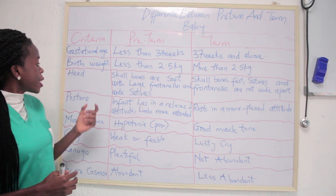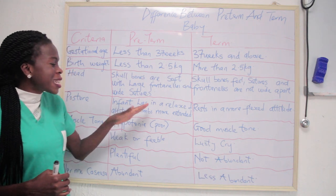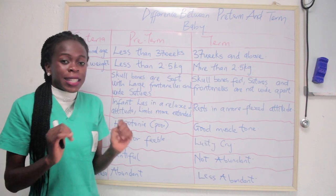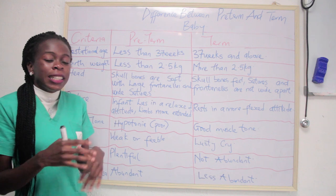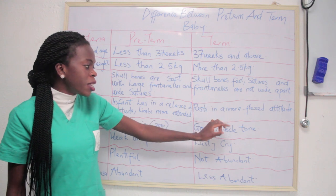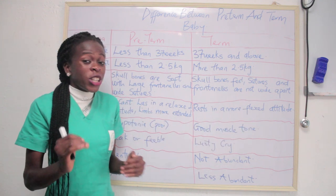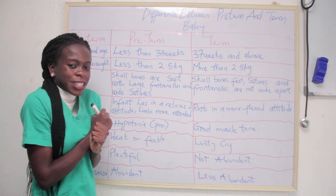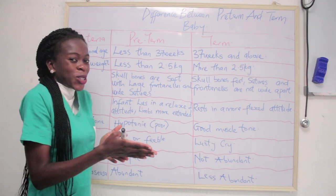The next criteria is posture. For pre-term babies, the infant lies in a relaxed attitude — the limbs are more extended, lying relaxed. For term babies, they rest in a more flexed attitude. A term baby is flexed, ready to come outside, while a pre-term baby is more extended because it is not yet mature.